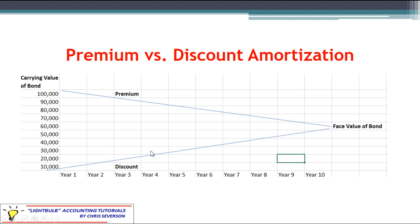The lines that are sloping basically show the carrying value at any point in time. The premium will start off higher and work its way down until it eventually equals the face value.